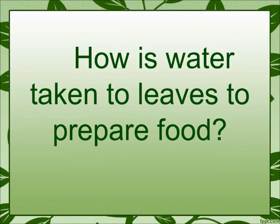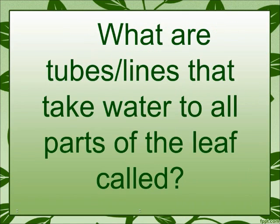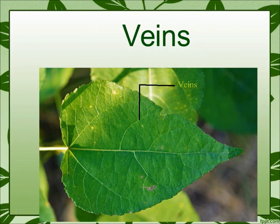How is water taken to leaves to prepare food? From root to stem and then leaves. What are the tubes or lines that take water to all parts of the leaf called? Veins.